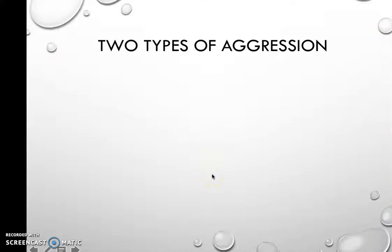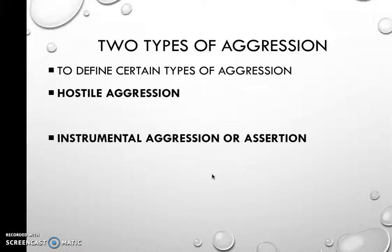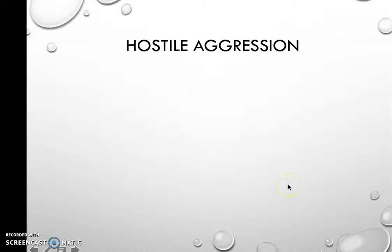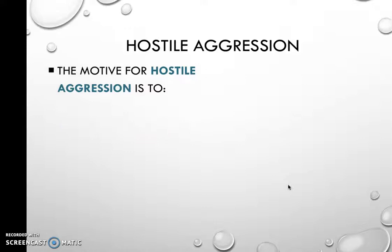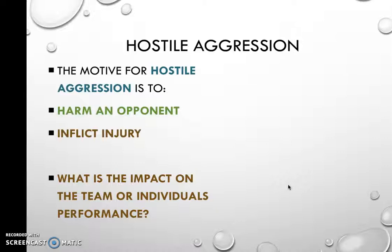So the two types of aggression are hostile aggression and instrumental aggression, or assertion — sometimes known as channeled aggression. Hostile aggression is the one exhibiting violence and intent for harm, whereas instrumental aggression or assertion — also known as channeled aggression — is where there is no intent to harm.